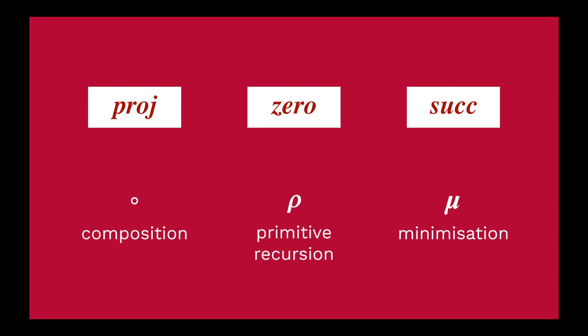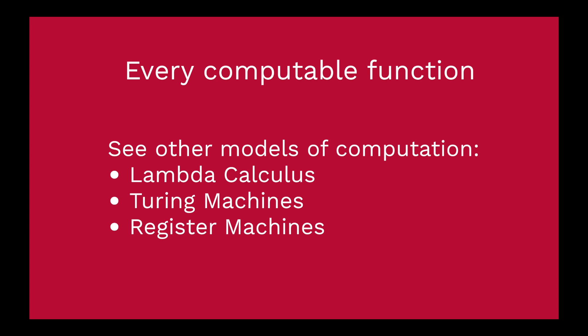That's minimization. Together with our basic building blocks and other ways of composing functions, we've now defined the partial recursive functions. The outrageous claim is that these partial recursive functions are the set of every computable function over the natural numbers. Other models of computation — the lambda calculus, Turing machines, and register machines — all turn out to compute the same set of functions. It's really quite incredible that we can define every computable function over the natural numbers with such a simple construction.